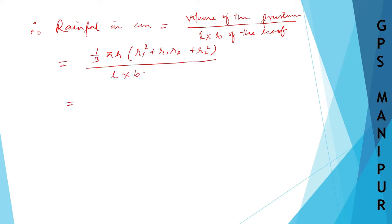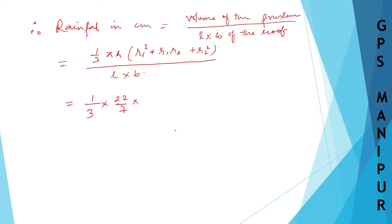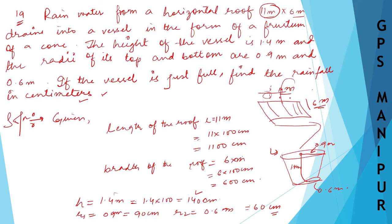So you can write down length into breadth, which will be equal to 1/3 × π, that is 22/7 × h. What is height? Height is 140 centimeters. So 140, divided by, let me write down here, length into breadth is 1100 and 600.